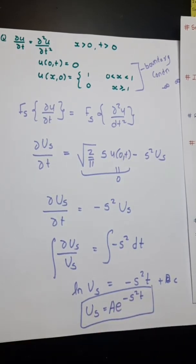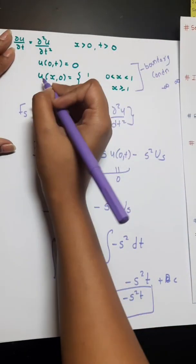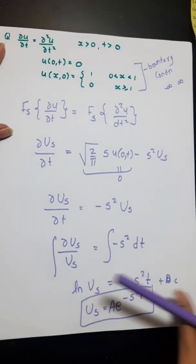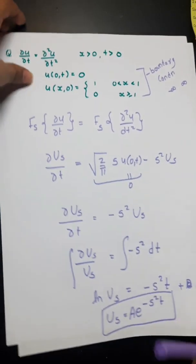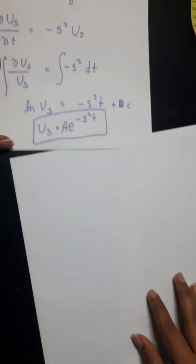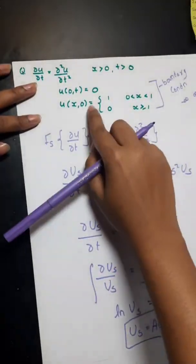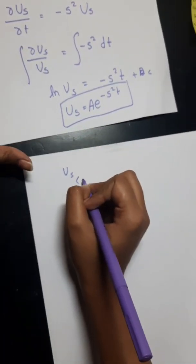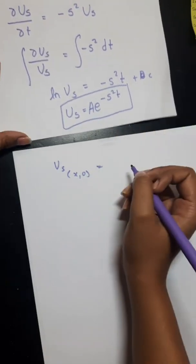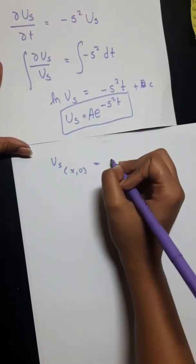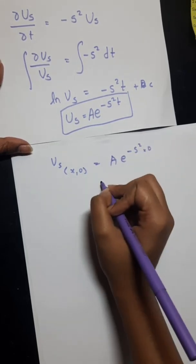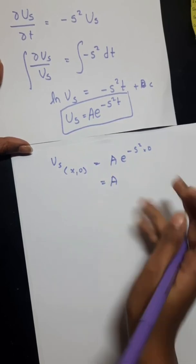For finding A, do we have any other condition in the question? Yes, we have u(x, 0). So now we will be solving it to get the value of A. We can see that u(x, 0) gives us Ũs at t = 0, which equals A · e^(−s² · 0) = A · 1 = A.